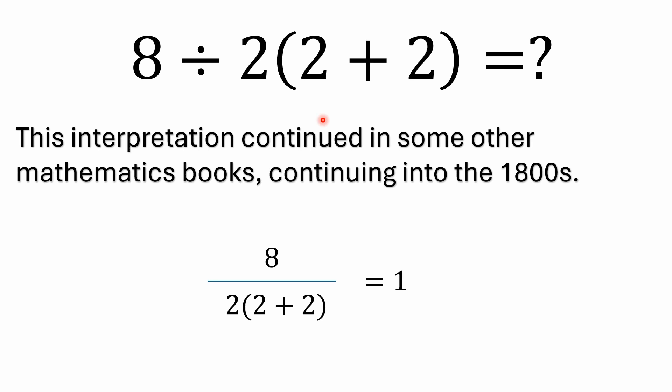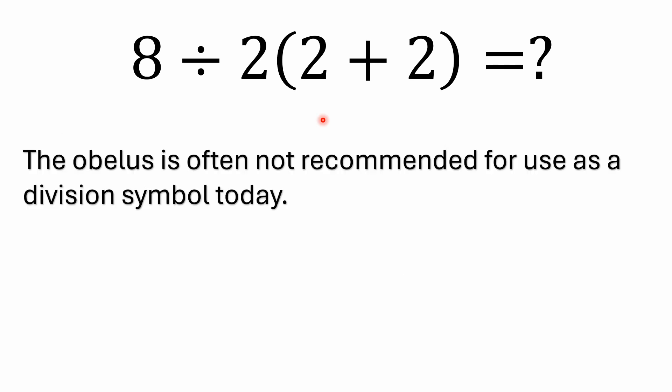If you look at the way he interpreted it, that would be considered 8 over, and then you have 2 times 2 plus 2, and in doing that you would get an answer of 1. Now that interpretation actually continued on in some other mathematics books. I don't recall the exact ones, but I've seen other references to other books, at least going into the late 1800s, where this interpretation was used. The obelisk, although in a lot of Western civilization it is used as division, most people interpret it as just dividing what's immediately to the left with what's immediately to the right. But it is looked at differently in other places and it has been looked at differently in the past, so that does add some confusion.